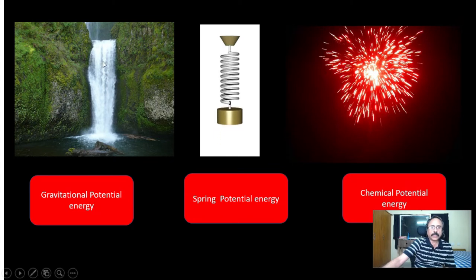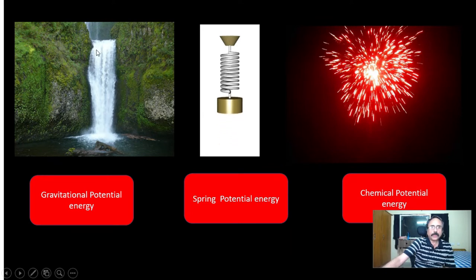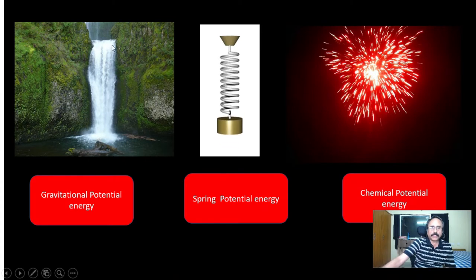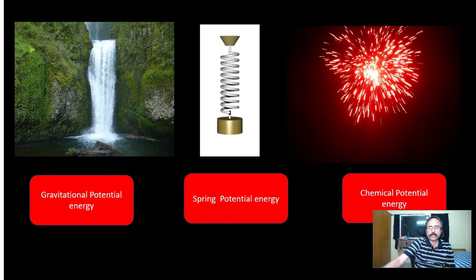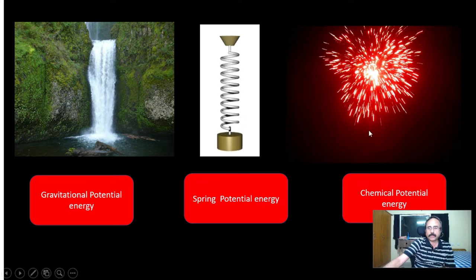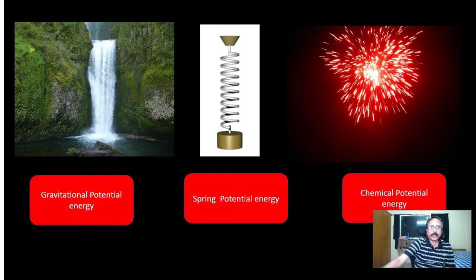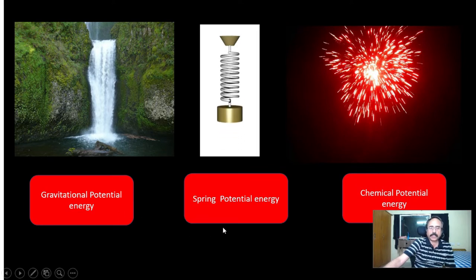For gravitational potential energy, you can give the example of a waterfall coming down from a great height to the ground — when the water is at that elevated position, it has potential energy. For spring potential energy, if you compress or stretch a spring, potential energy is stored, because compressing or stretching requires work. Similarly, by virtue of configuration, chemical potential energy is caused. In this video, we will concentrate only on gravitational potential energy; in videos to come, we will cover spring potential energy.